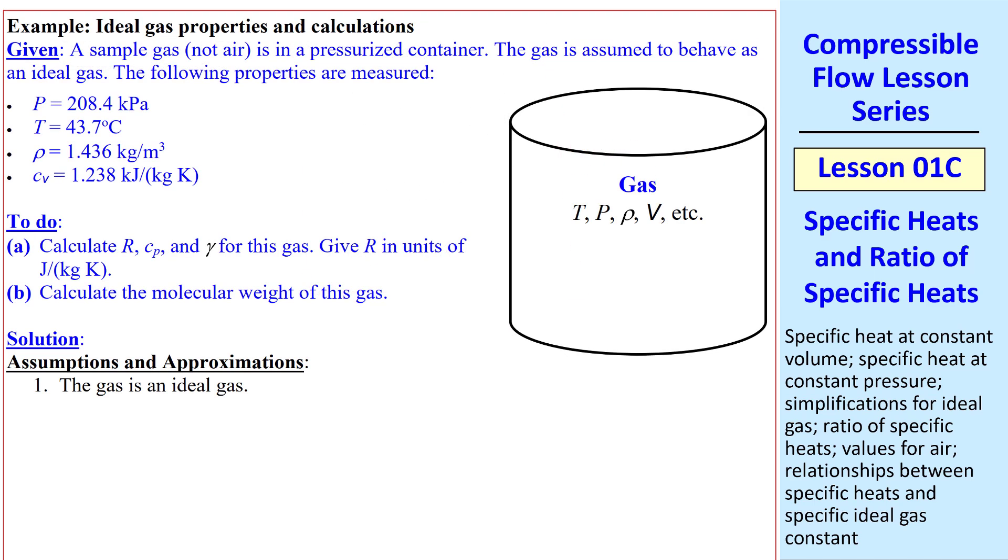And I'll do an example here of such a case. A sample gas, which is not air, is in a pressurized container. We assume it's an ideal gas. We measure these properties: pressure, temperature, density, and Cv. Notice that when I type Cv, it's a lowercase c, as with Cp. And I use an Arial font for V, since that's the font I use for volume. When I write Cv in these notes, I use a sort of a script V. So don't let that confuse you. We want to calculate R, Cp, and gamma for this gas, and the molecular weight. There's only one assumption and approximation, and that is that the gas is ideal.